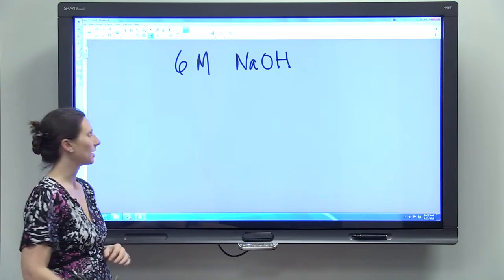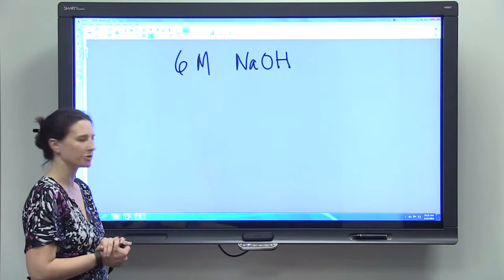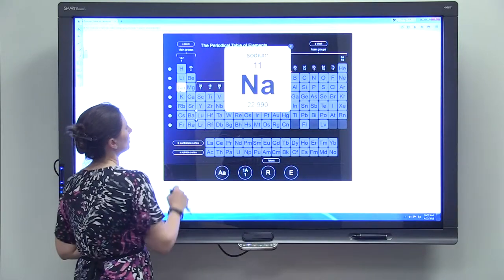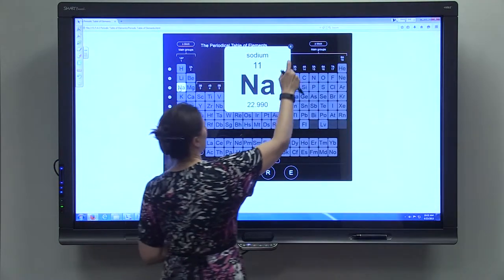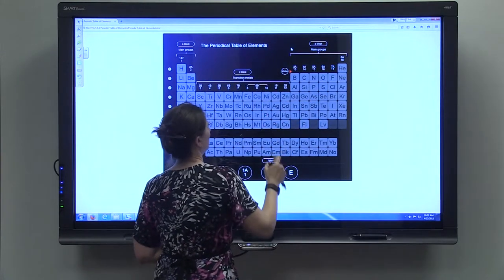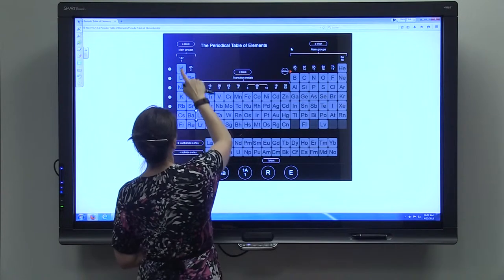Next I'm going to calculate a 6 molar sodium hydroxide solution. Sodium we know is 22.99. Oxygen we know is 16. Hydrogen we know is 1.01.